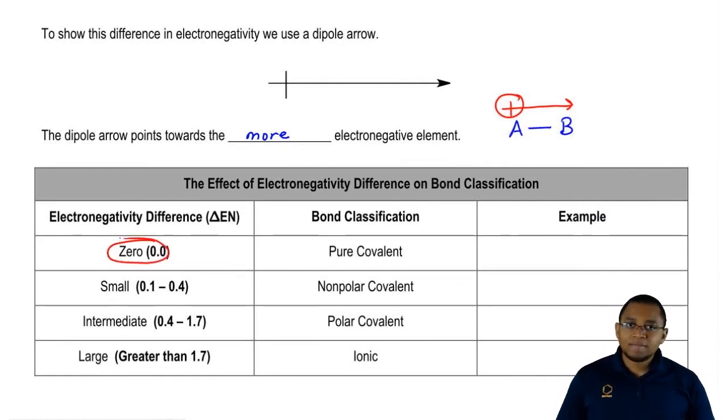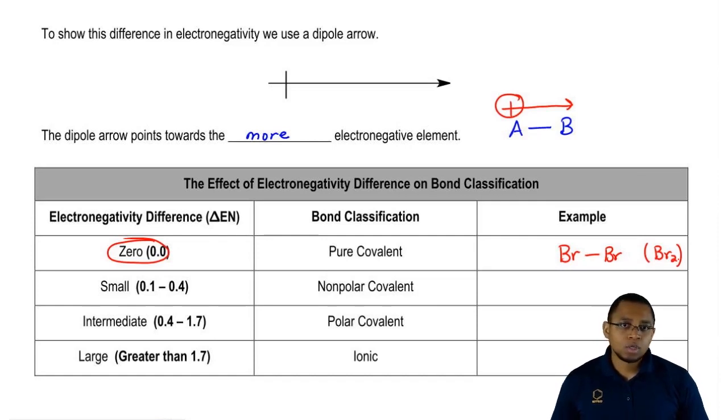If we have an electronegativity difference of 0, that means it's classified as a pure covalent bond. A good example would be Br connected to Br, so basically Br2. They both have the same electronegativity number, so when you subtract them from each other, it's 0. We would call them a pure covalent compound.